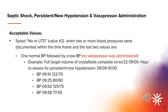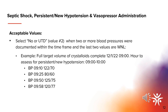Of note, the scenario on slide number seven includes the same blood pressure measurements in the same order — one blood pressure within normal limits followed by a hypotensive blood pressure — but because a vasopressor was administered in that case, we would select value one — yes — for persistent or new hypotension. In this example, the last two blood pressures measured are within normal limits. We would answer no to new or persistent hypotension present, and a vasopressor would not be required.